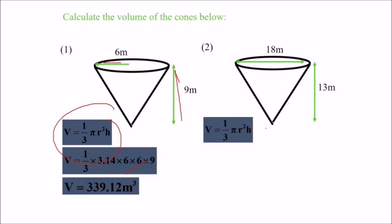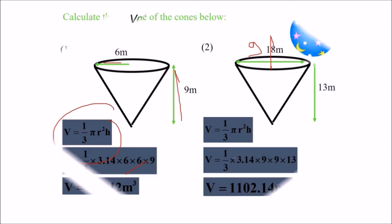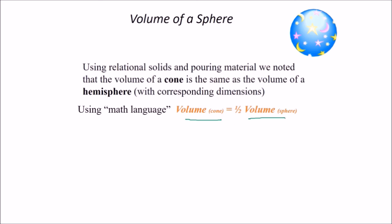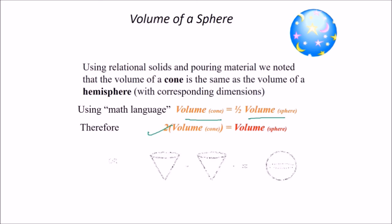For another cone with diameter 18 (radius = 9) and height 19, the volume is computed using (1/3) π r² h. Using relational solids and pouring material, we note the volume of the cone is the same as the volume of a hemisphere, so two cone volumes equal one sphere volume.